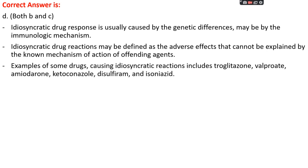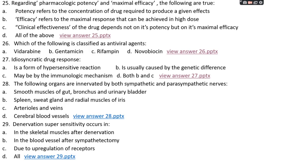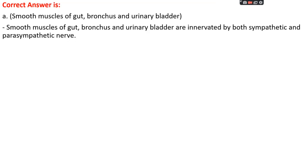Examples of idiosyncratic drug reactions include troglitazone, valproate, amiodarone, ketoconazole, disulfiram, and isoniazid. Question number twenty-eight: which organs are innervated by both sympathetic and parasympathetic nerves? Option A: smooth muscles of gut, bronchus, and urinary bladder; option B: spleen, sweat gland, and radial muscles of iris; option C: arterioles and veins; or option D: cerebral blood vessels. The right answer is option A — smooth muscles of the gut, bronchus, and urinary bladder are innervated by both sympathetic and parasympathetic nerves.